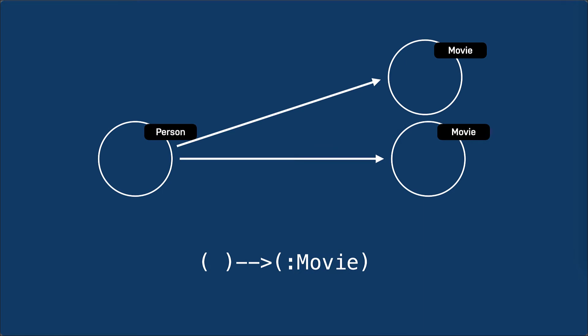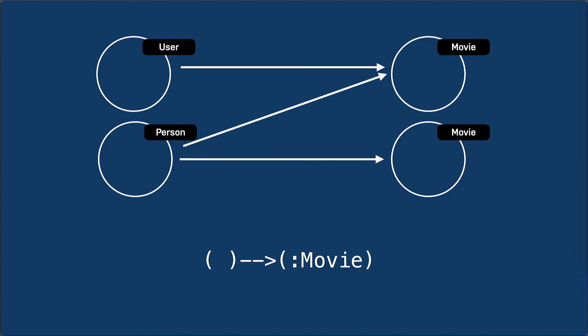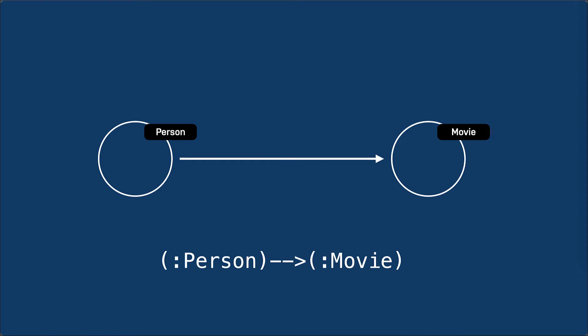Because in our pattern we specified the movie label for the to-end of the relationship, we can also use this pattern to retrieve both user and person nodes that have a relationship to movie nodes. If we specify labels for both sides of the relationship, we retrieve only person and movie nodes that are related to each other.